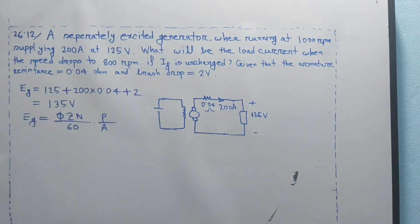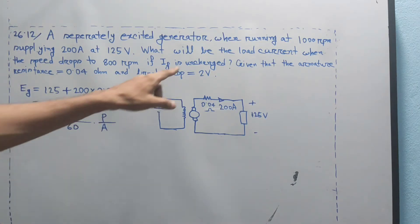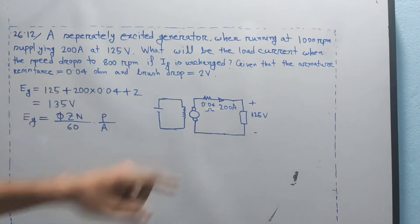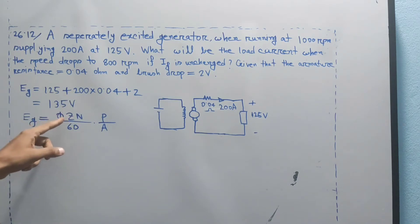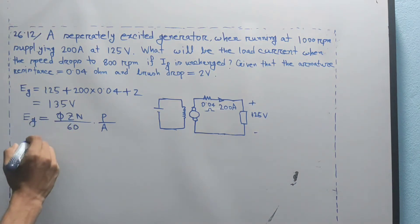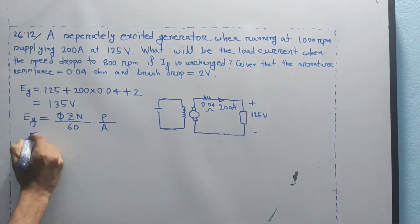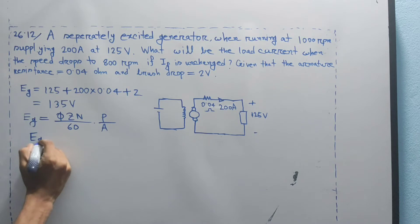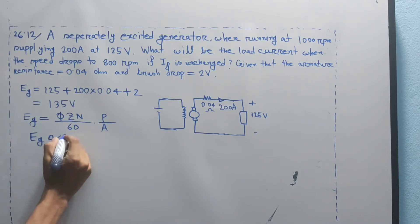We are going to find the field current dependency on flux. Since the field current is unchanged, the flux is constant — that means phi is proportional 1 to 1. So Eg is simply proportional to N.